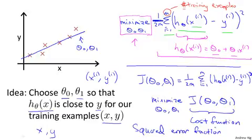But the squared error cost function is probably the most commonly used one for regression problems. Later in this class, we'll talk about alternative cost functions as well. But this choice that we just had should be a pretty reasonable thing to try for most linear regression problems. Okay, so that's the cost function.